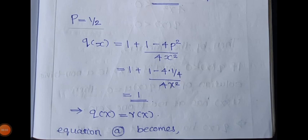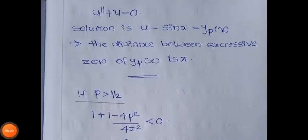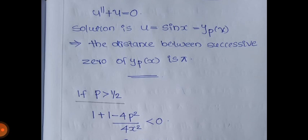If p = 1/2, then q(x) = 1 + (1 − 4·(1/4))/(4x²) = 1 + 0 = 1. So q(x) = r(x) = 1, and equation A becomes u'' + u = 0. The solution is u = sin(x) = y_p(x). Therefore the distance between successive zeros of y_p(x) is exactly π, since sin(nπ) = 0.